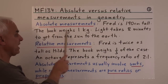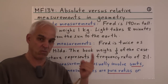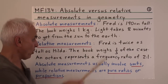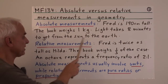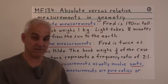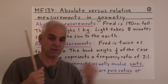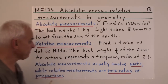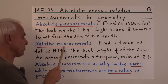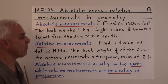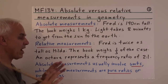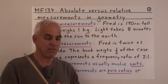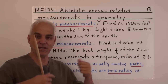Or the book weighs one kilogram — we're just talking about one book making a measurement about its weight. Or light takes eight minutes to get from the Sun to the Earth — that's involving two objects, but we're really only measuring one quantity. A relative measurement is where we have two kinds of similar things and we're comparing them.